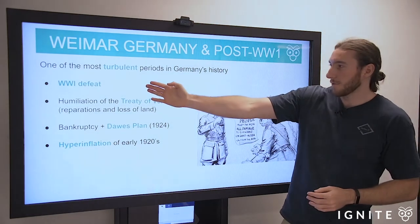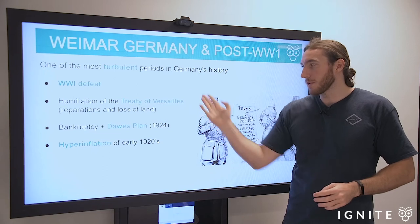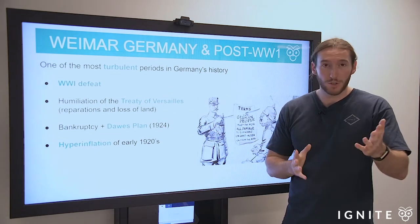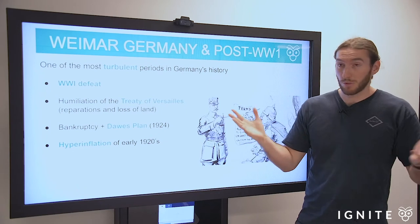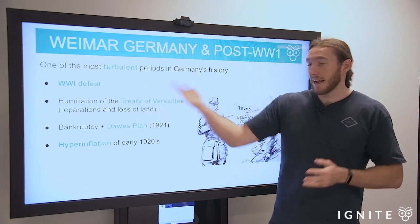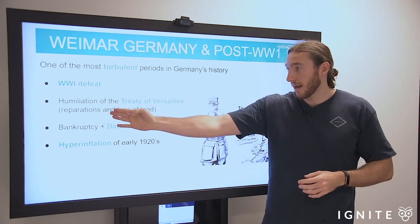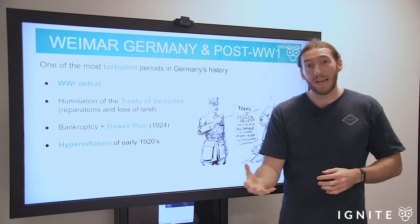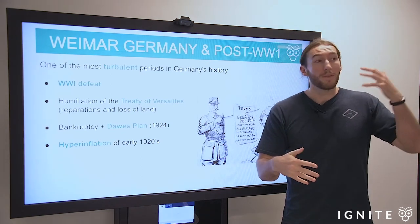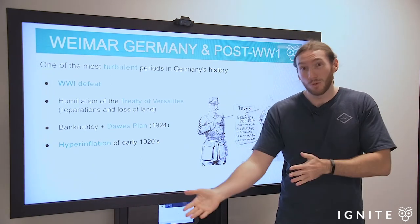So we have the defeat — we've explained that. But when World War I ended, we had the Treaty of Versailles. You might have heard of this before, especially if you study history. Germany was humiliated. They had lost the war, they had to concede to that loss, and they had to pay reparations and give up land. So they had to go and actually pay back all the countries they had damaged throughout the war, because they were the losers.